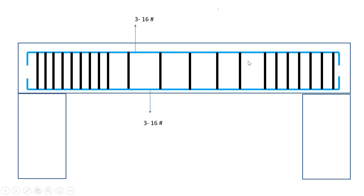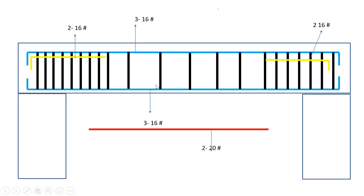This is the extra bar provided — 16mm diameter, two extra bars at the left support, and similarly 16mm diameter two extra bars at the right support. At the center bottom position, we have provided two bars of 20mm diameter in the second layer. All these things we have seen in previous lectures, so they are easy to understand now.